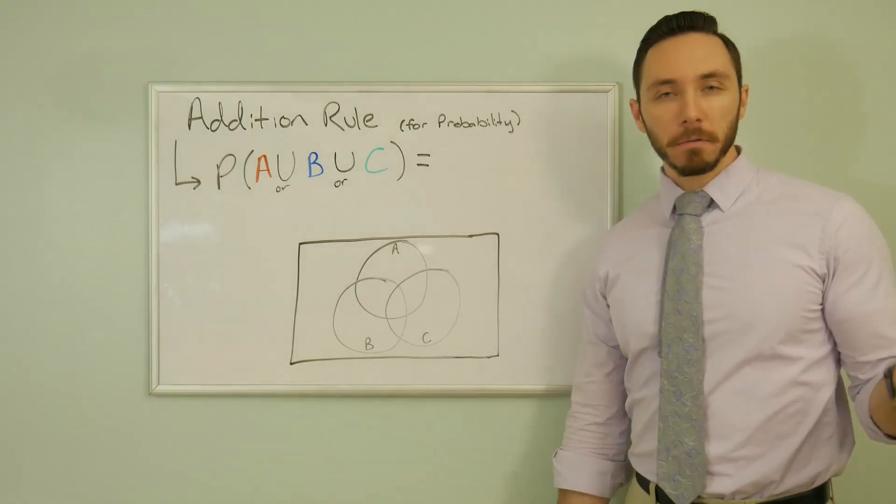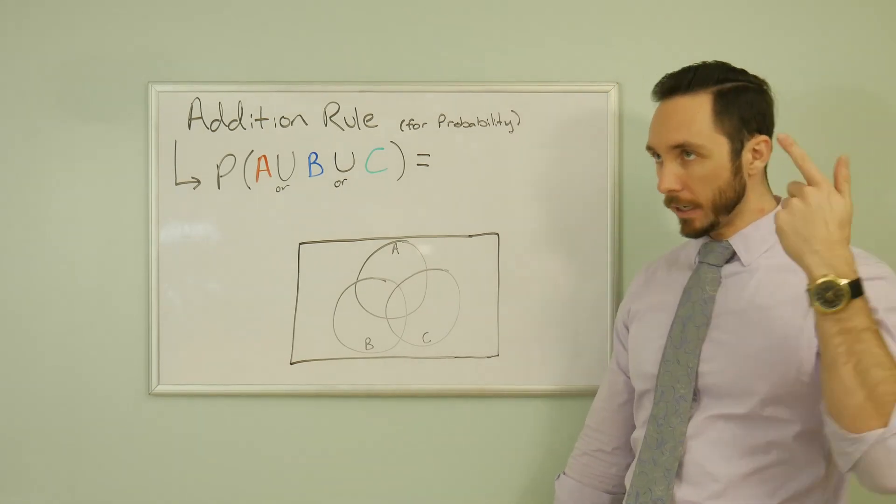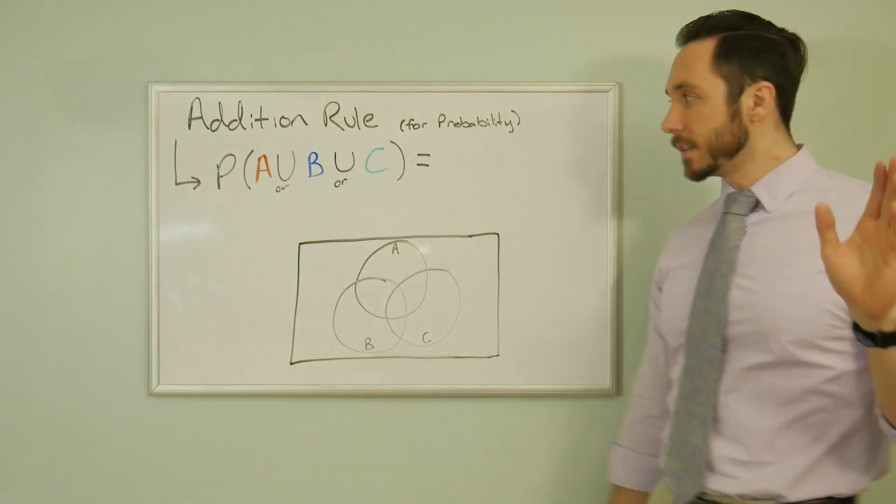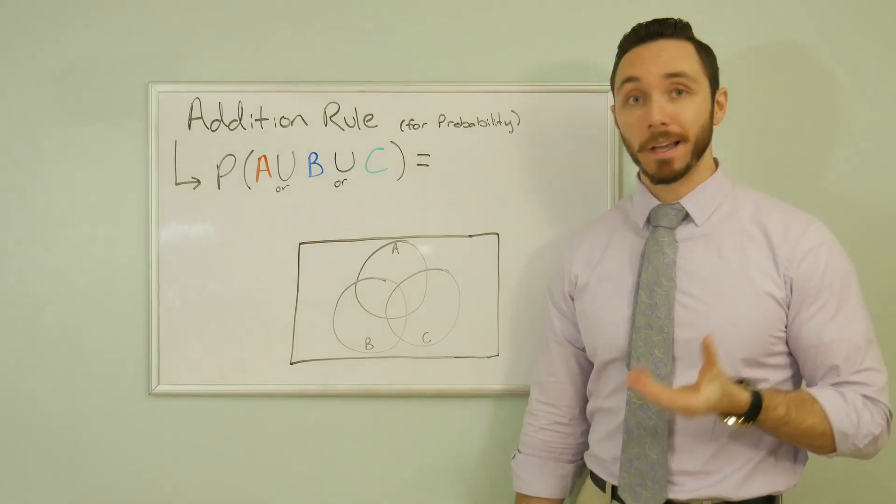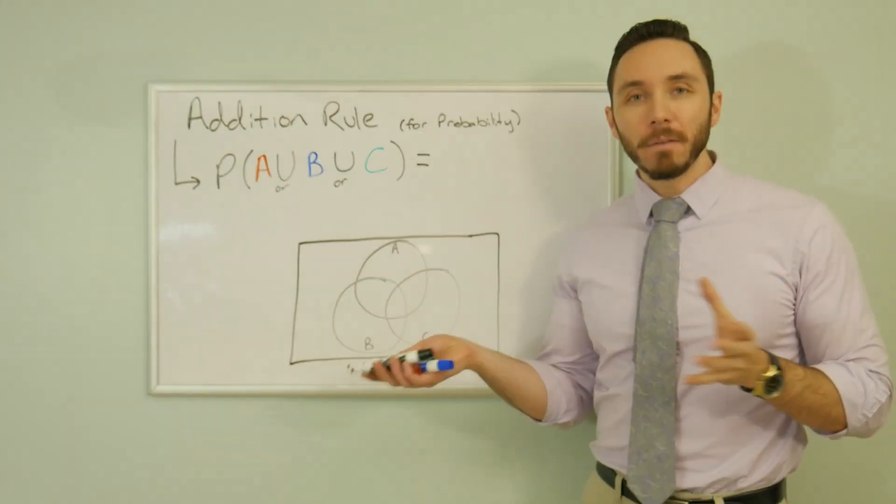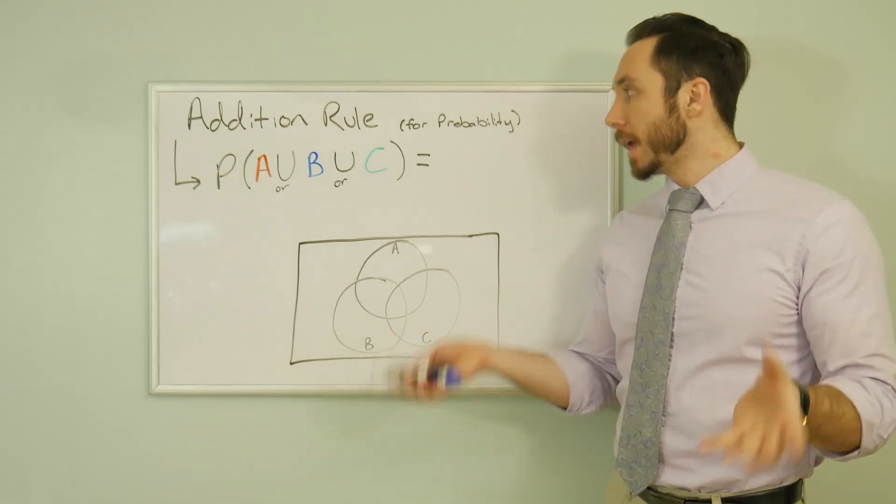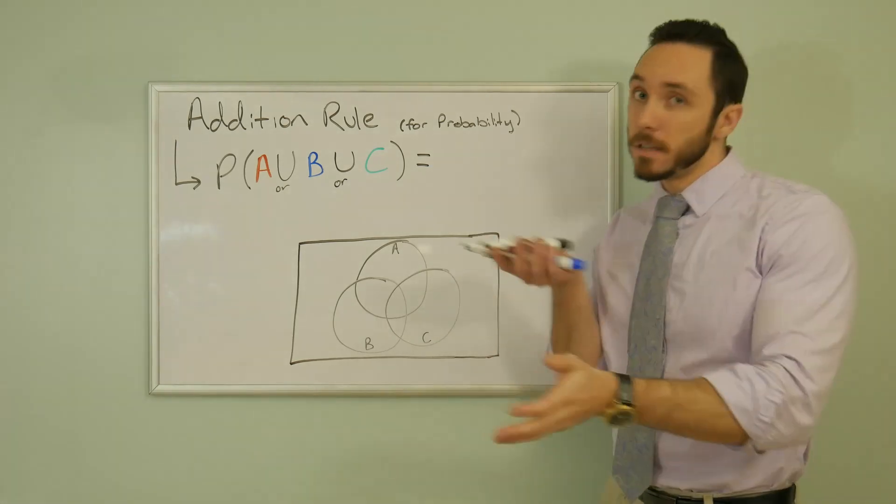Okay, so before I give the big reveal of this addition rule probability statement with three different events, try to think of this on your own, because the intuition that we just applied to two events is very similar to the intuition that we're going to apply here to three. So here again, we can just say A is that event of liking apples, B bananas, C we can say cherries.